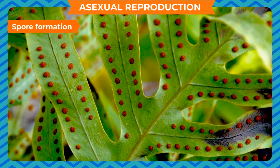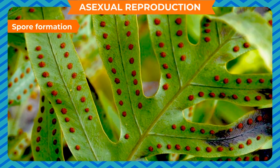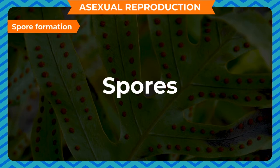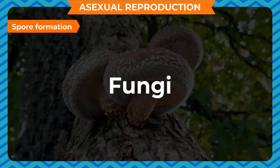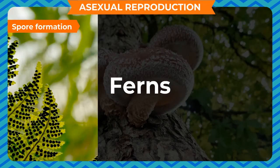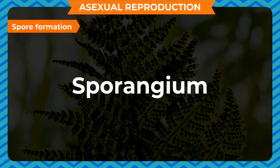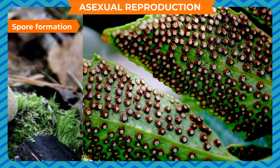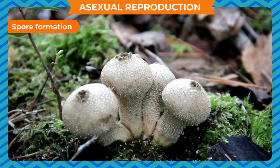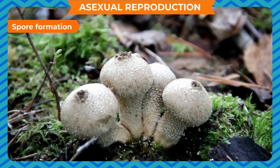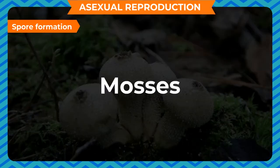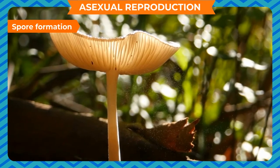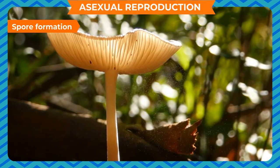Spore Formation: This is the most common method of asexual reproduction. Small, spherical, thick-walled cells are called spores. They are formed by fungi, mosses, and ferns. These spores develop in a structure called sporangium. When the spores are released, they keep floating in the air and are carried to far-off places where, under favourable conditions, they grow into new fungi, mosses, or ferns. Each spore is surrounded by a hard protective coat which withstands unfavourable conditions.